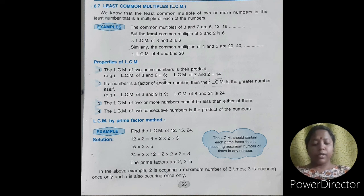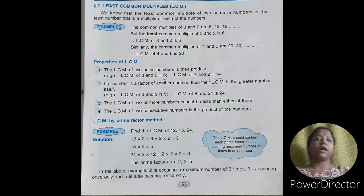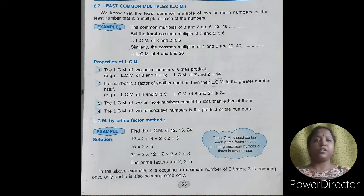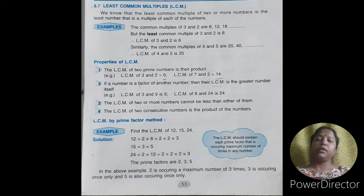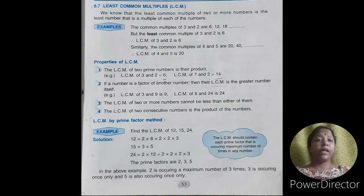Next property: if a number is a factor of another number, then their LCM is the greater number itself. Example: LCM of 3 and 9 — 3 is the factor of 9, therefore LCM of 3 and 9 is 9, the greater number. Next example: LCM of 8 and 24 — 8 is the factor of 24, therefore the LCM of 8 and 24 is 24, the greater number.